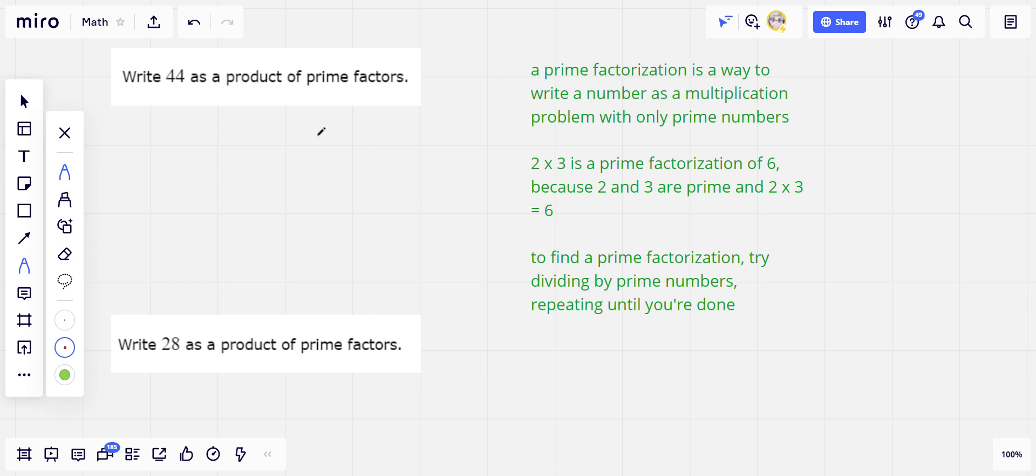So how would you do this? I think probably the most intuitive way is just to start dividing. If you see that something is divisible by something else, especially if it's a prime number, that's a good way to get going.